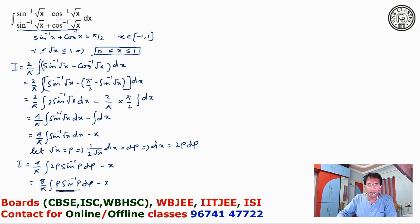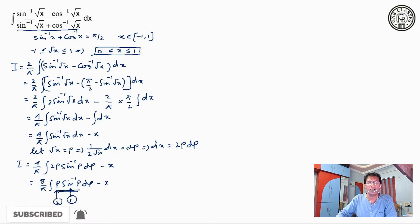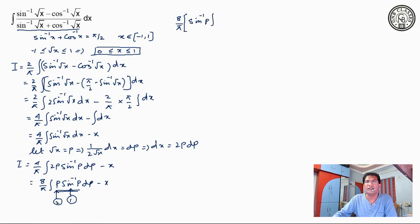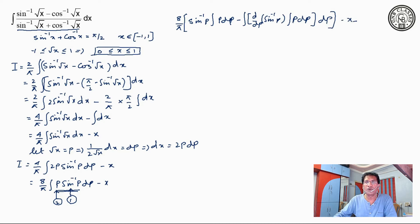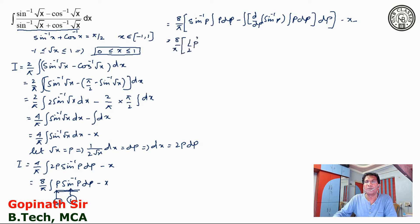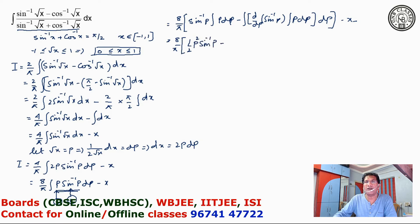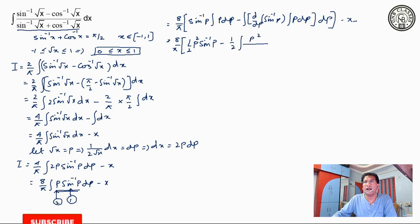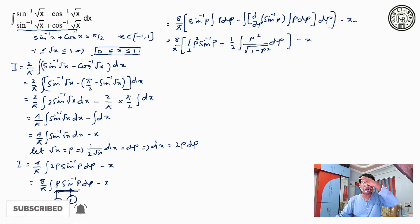Now this integration I will do by integration by parts, taking sin inverse p as my first function and p as my second function. So we have 8 by pi: sin inverse p times integration of p dp, minus integration of d by dp of sin inverse p times integration of p dp, whole dp. And minus x is there. So we get 8 by pi times: half p squared sin inverse p minus half integration p squared by under root 1 minus p squared dp.